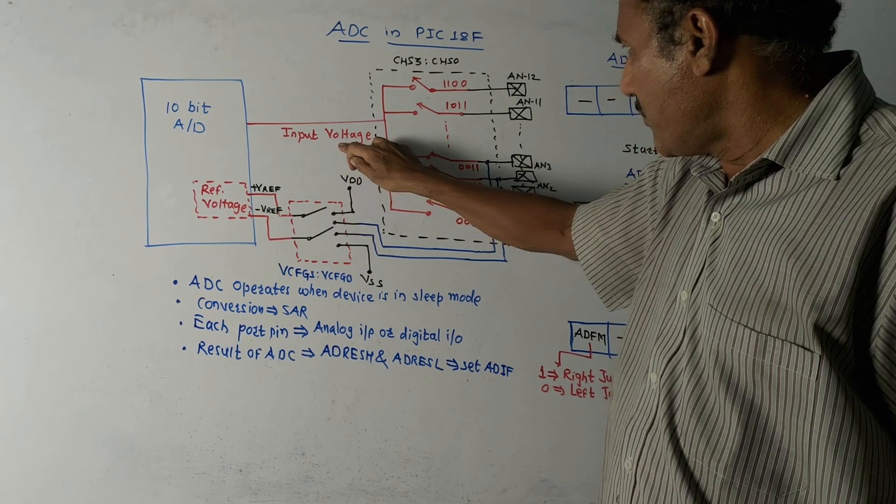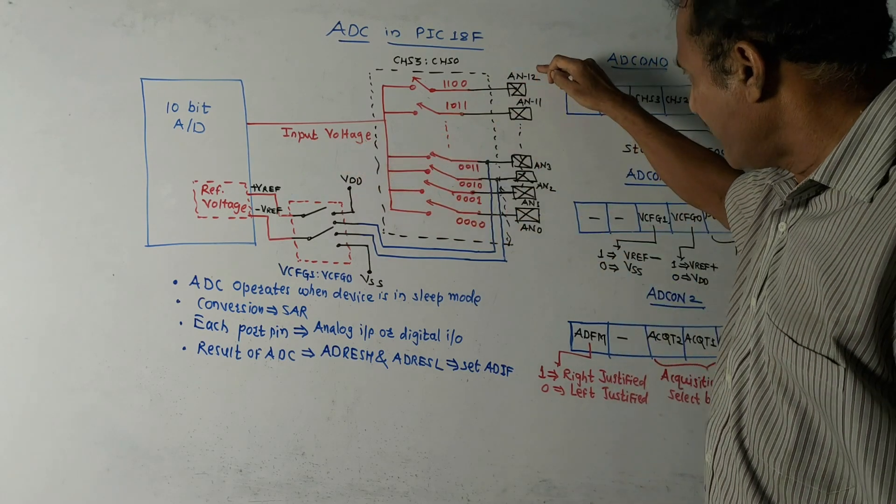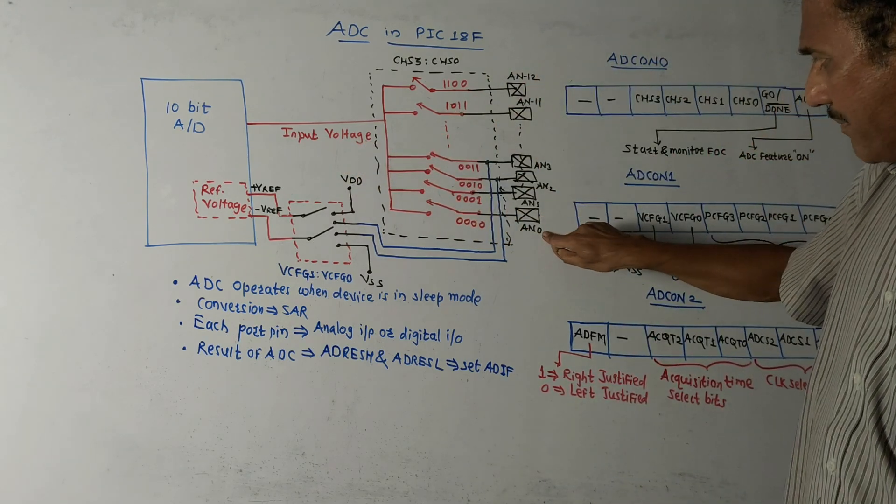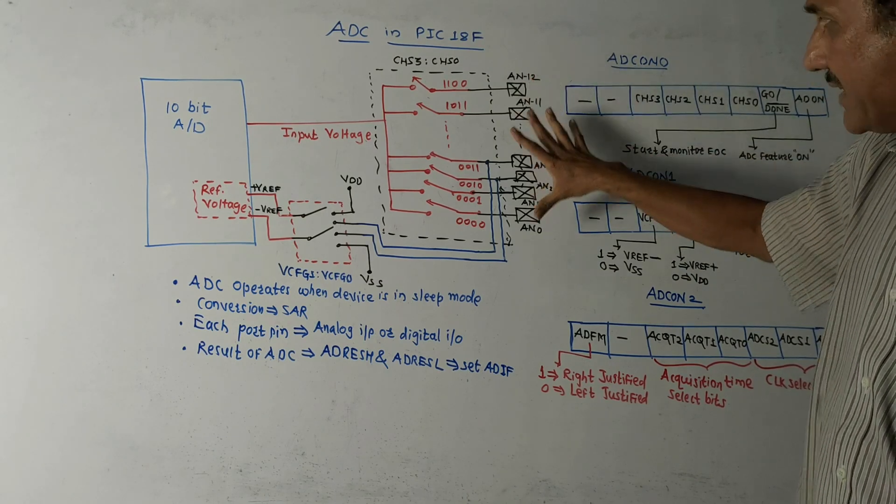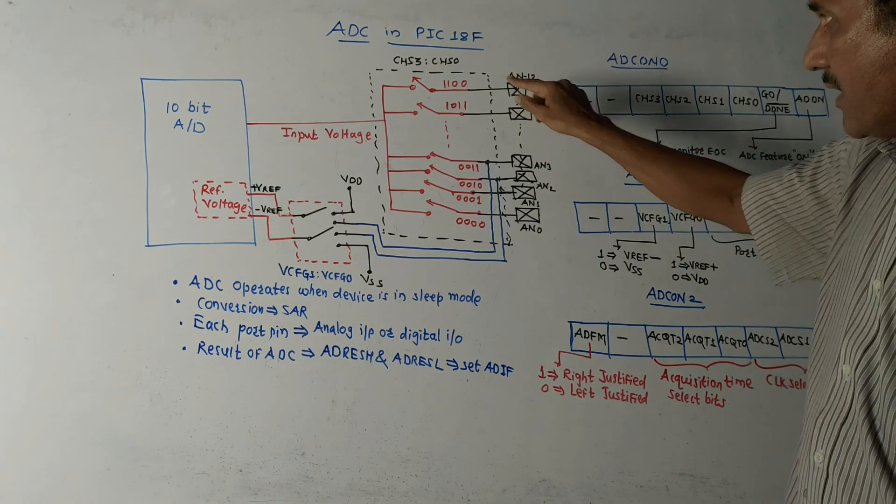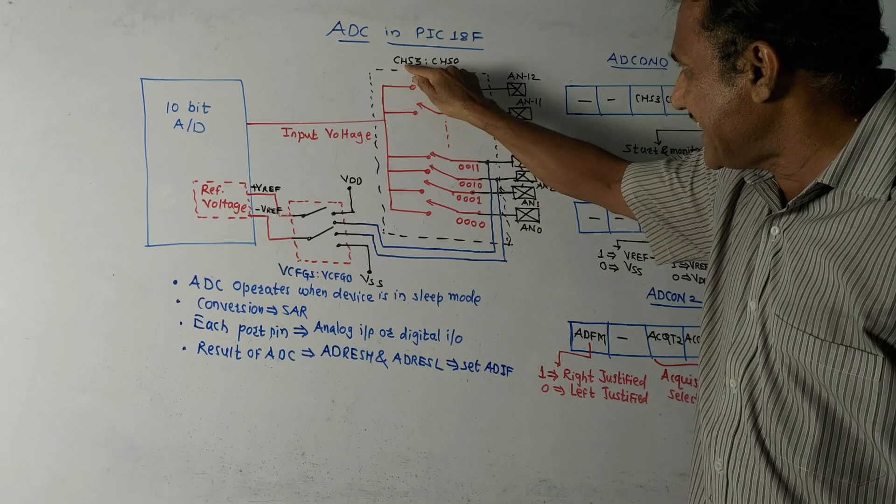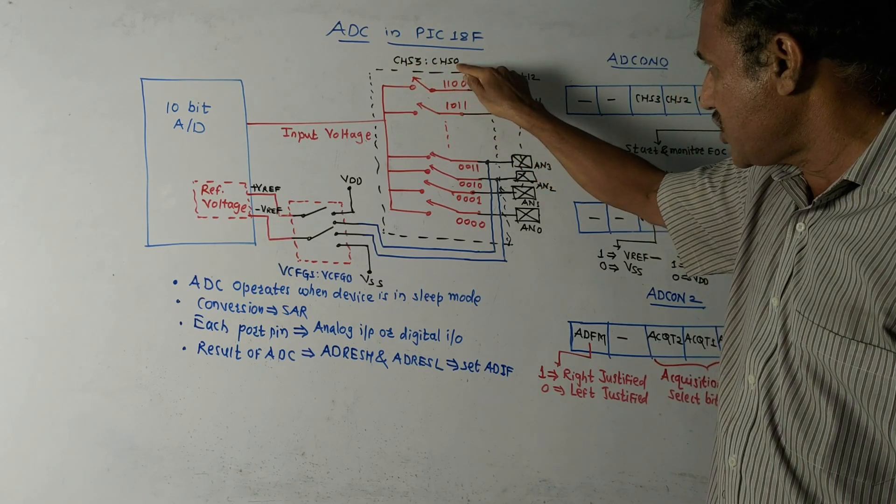Different channels are shown: channel number AN0 to AN12, so total 13 channels are shown. These are the corresponding bits: CHS3 to CHS0.